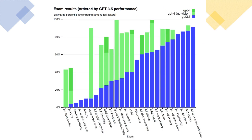This figure shows GPT performance on academic and professional exams. In each case, they simulated the conditions and scoring of the real exam. Exams are ordered from low to high based on GPT-3.5 performance.